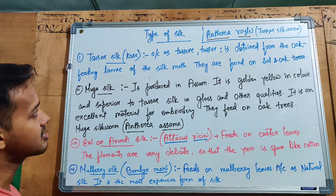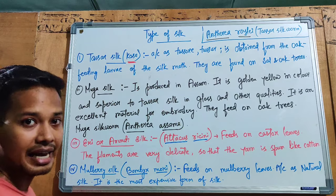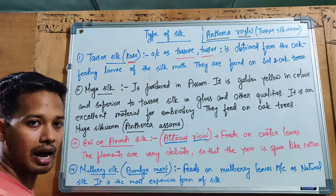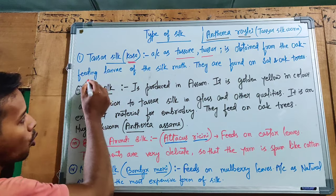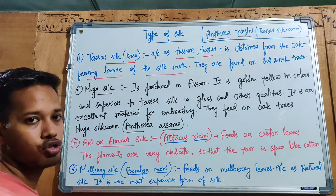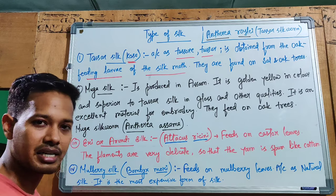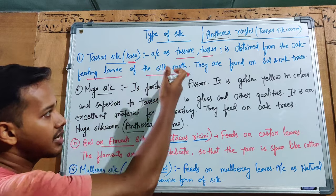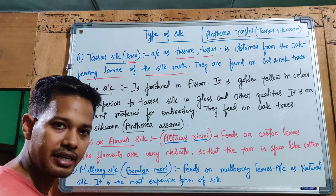The first type is Tassar silk, also called Koshan or Dasor in local language. It is obtained from oak-feeding larvae of the silk moth. The moth is like a butterfly, generally 5 cm long with a hairy body.